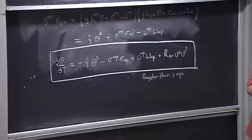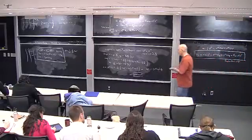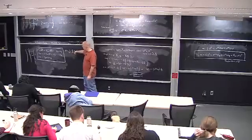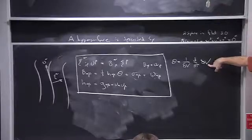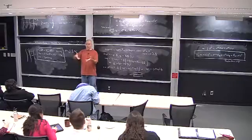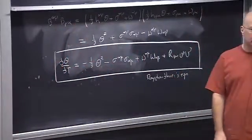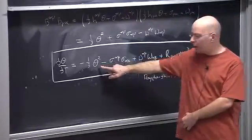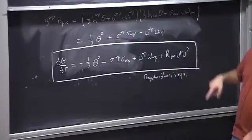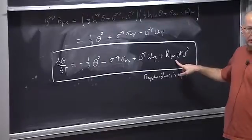From Raychaudhuri's equation I can prove the focusing theorem, which states: if you have matter in your spacetime satisfying reasonable energy conditions, then if you have focusing geodesics they'll focus more rapidly in the future, and if you have an expanding congruence it will expand less rapidly in the future. Matter has the action of focusing time-like geodesics together — it's a statement that gravity acts in an attractive manner.